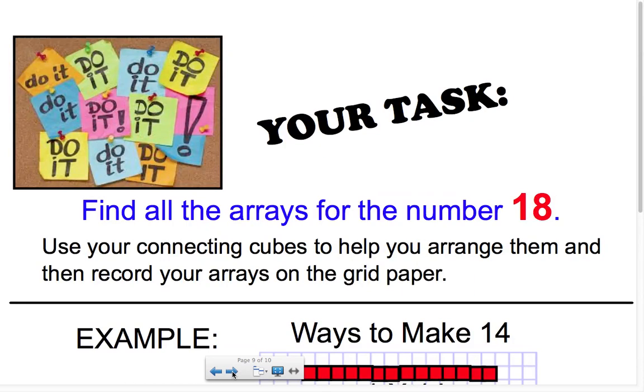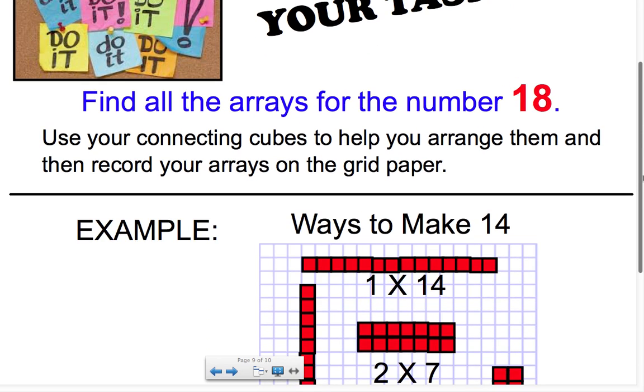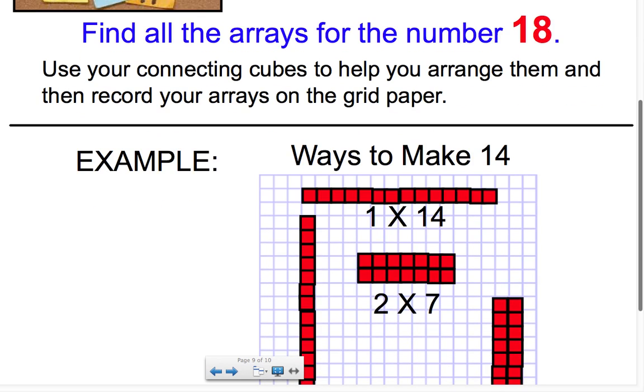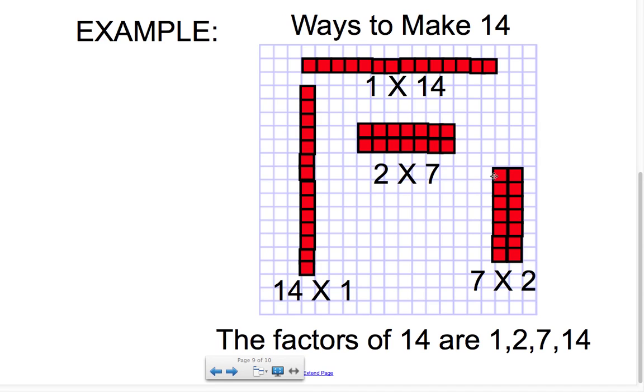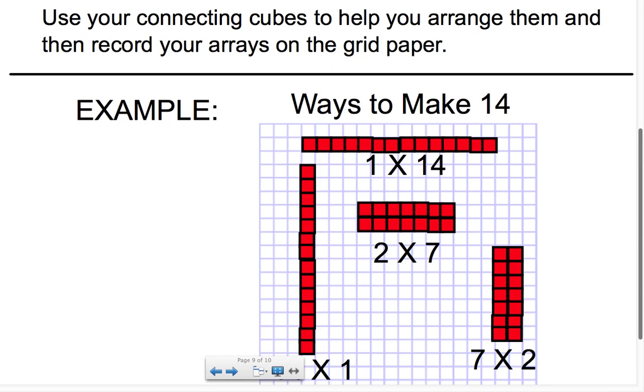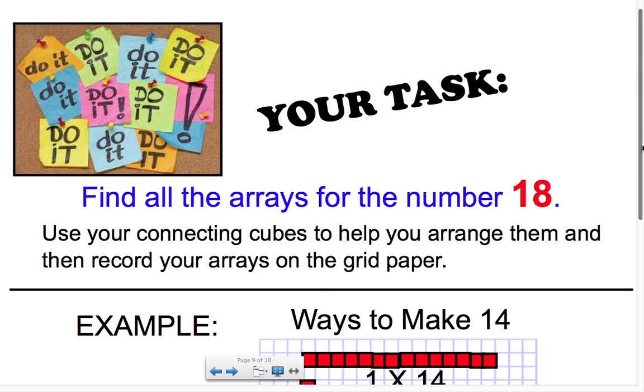So now your task is going to be to find all the arrays for the number eighteen. You're going to use your connecting cubes, arrange them, and then record your arrays on the grid paper by coloring in your squares. The sample of my fourteen is included here and posted in class for your reference. Don't forget that you need to add your title, and I encourage you to try to challenge yourself once you think you've found all of your arrays to see if you can list the factors of eighteen as well. Make sure that you're working with your partner and that you're doing your best for your math, and I can't wait to see all the ways that you can make eighteen.